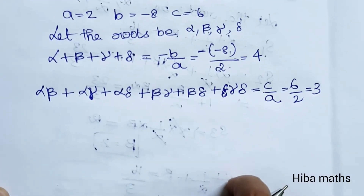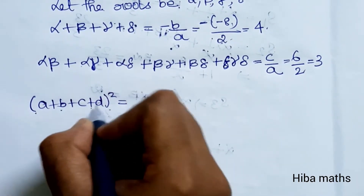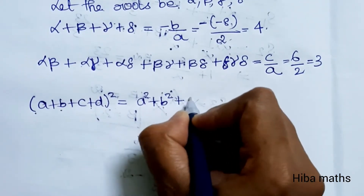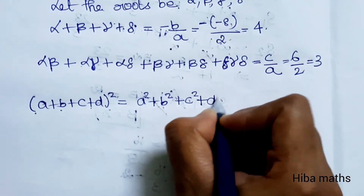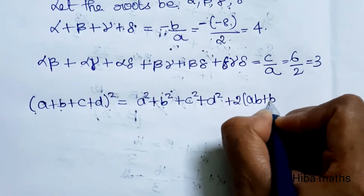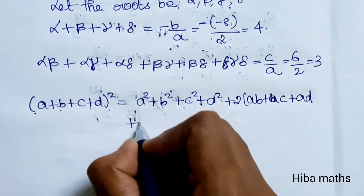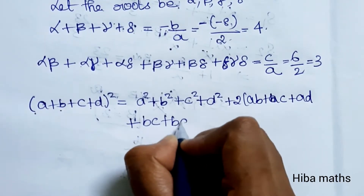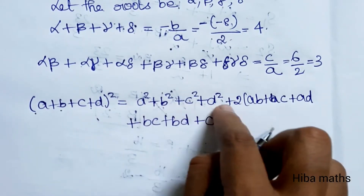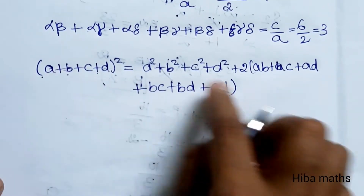We have to find the sum of the squares. We will use the square formula: a plus b plus c plus d whole square is equal to a square plus b square plus c square plus d square plus 2 times of ab, ac, ad, bc, bd, cd.